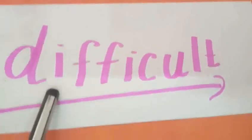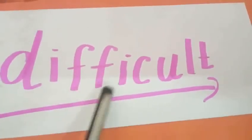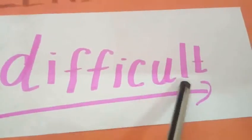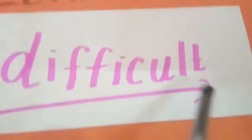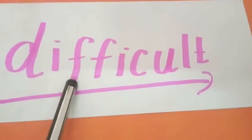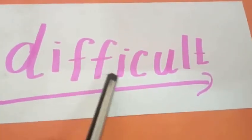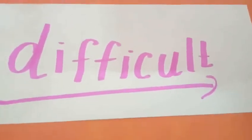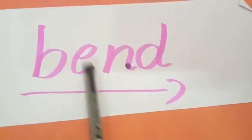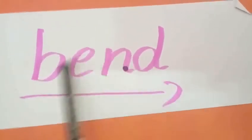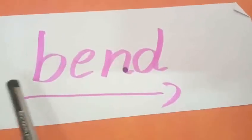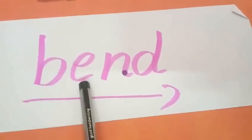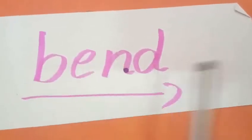D-I-F-F-I-C-U-L-T — Difficult. What is that whole word? Difficult. Next: B-E-D — Bend. Repeat after me: B-E-D — Bend. Again, I will show you those flashcards.